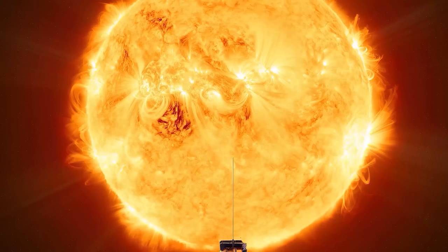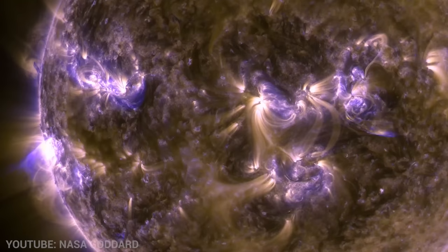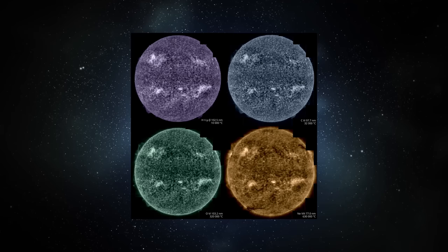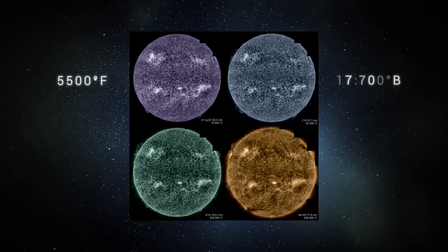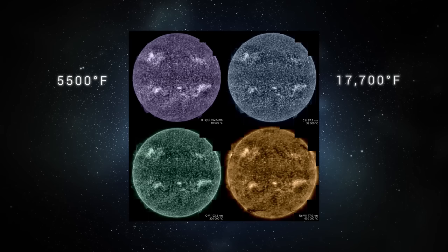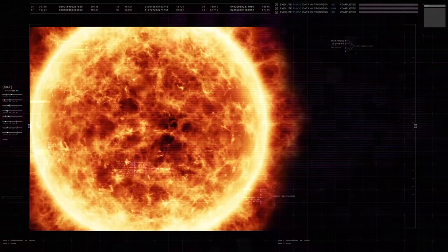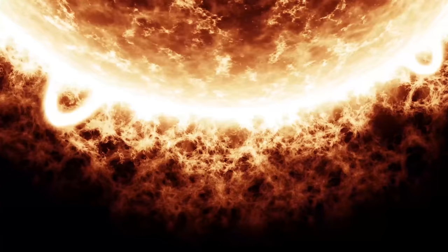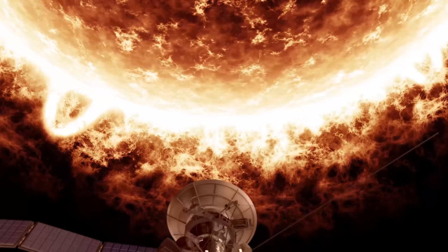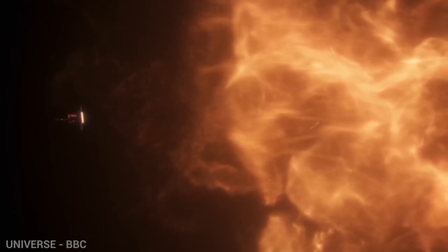The device also took several pictures using the SPICE tool, which captures images using UV light. We can identify every layer of the sun from the corona to the chromosphere as it approaches the surface. In the SPICE image sequence, purple corresponds to hydrogen gas at 5,500 degrees Fahrenheit, blue indicates carbon at 17,700 degrees Fahrenheit, green is oxygen at 177,000 degrees Fahrenheit, and yellow is neon at 350,000 degrees Fahrenheit. This piece of equipment will be flying close to the sun many more times, approaching it from different angles.